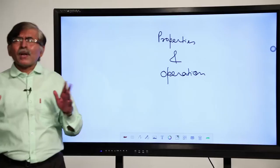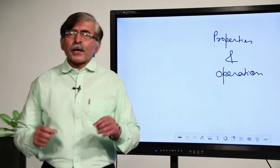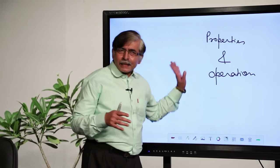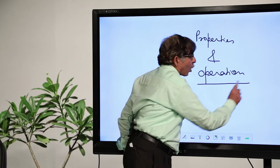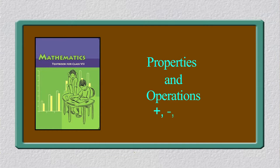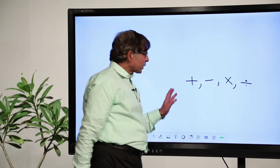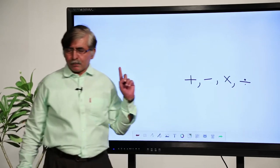Properties means: what will happen if we add two numbers? In case of whole numbers, if we add two whole numbers we get a whole number. Here in case of integers, we also check whether this happens or not. Operations means the four fundamental operations: addition, subtraction, multiplication, and division. We will see what happens when two integers are added, subtracted, or multiplied.